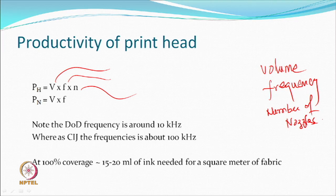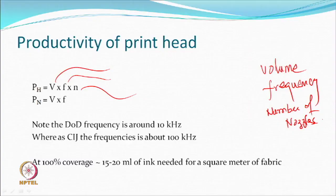At 100% coverage, the ink required is approximately 15 to 20 milliliters per square meter — not a very large volume, but very effectively spread. In conventional printing, the volume of paste used is very large because many components wash off later. In digital inkjet printing, everything used is more or less utilized. Inks may be costlier, but you use just the right amount with no wastage, theoretically.